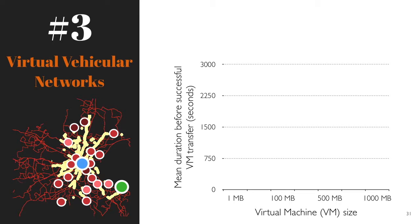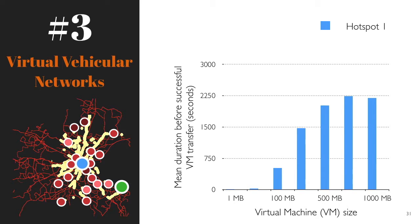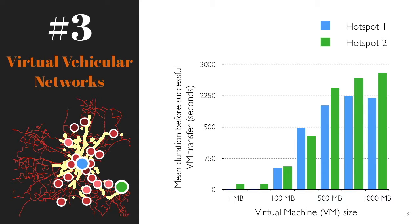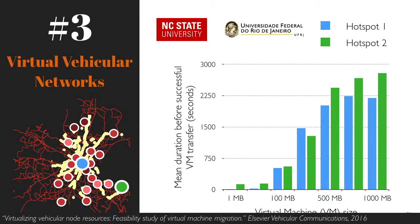We can see that there are specific locations — termed hot spots — with a higher density of long-duration contacts, which allow the transfer of typical virtual machines. We selected two hot spots: one located downtown with a high number of contacts, and a second selected arbitrarily. We simulated the migration of virtual machines of various sizes, assuming the transfer starts whenever two buses are in contact at the hot spots. We can see that the larger the virtual machine, the longer it takes to successfully transfer a VM, accounting for failed attempts due to short-lived contacts. In most cases, hot spot one is where it takes less time to successfully transfer VMs. We are also working on strategies to predict the utility of contacts to reduce the latency needed to find good contacts.